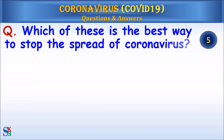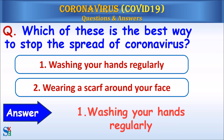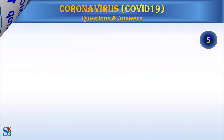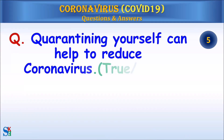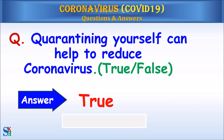Question: Which of these is the best way to stop the spread of coronavirus — one, washing your hands regularly, or two, wearing a scarf around your face? Answer: One — washing your hands regularly. Question: Quarantining yourself can help to reduce coronavirus — true or false? Answer: True.